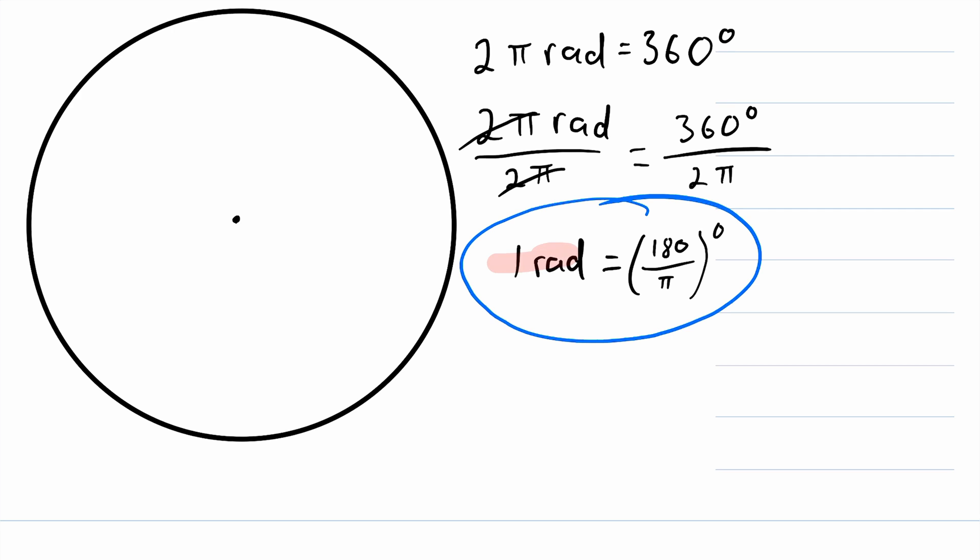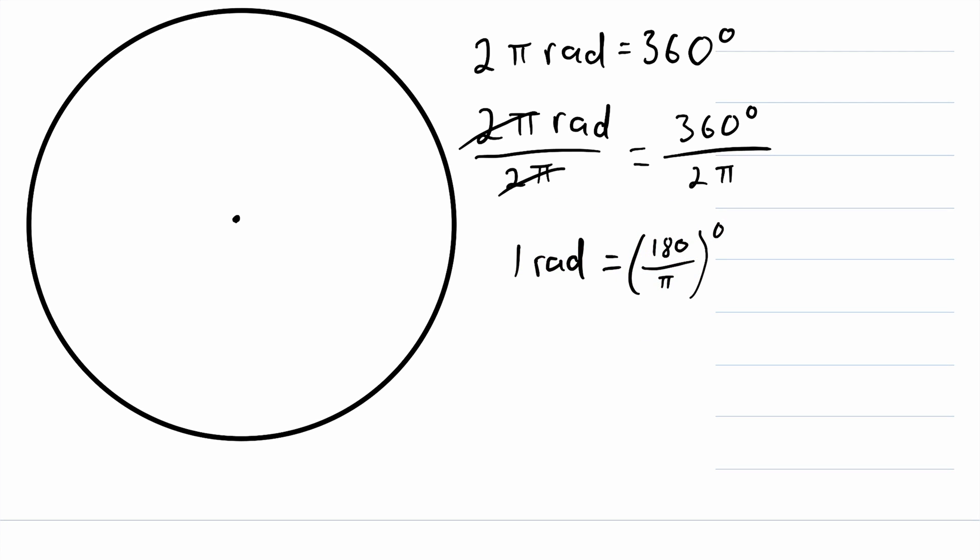So whatever number of radians you have that you want to turn into degrees, all you have to do is multiply both sides of this equation by that number. So for example, let's say that we have an angle of π radians, which looks like this. And we want to convert π radians into degrees. All we have to do is multiply both sides of this equation by π.